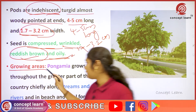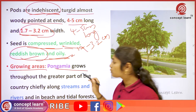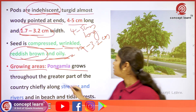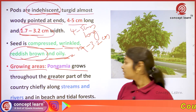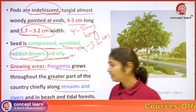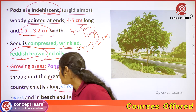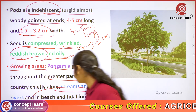Pongamia grows throughout the greater part of the country, chiefly along streams and rivers and in beach and tidal forests.